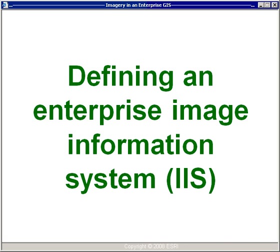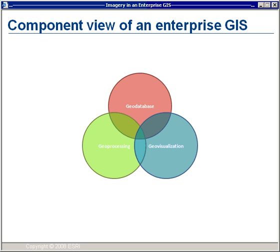So how do we bring imagery into an enterprise context? What would an enterprise image information system look like? To answer those questions, it's perhaps useful to think about how geographic information has been brought into an enterprise context, something that ESRI's users have done very successfully over the last 10 years or so. Can our experiences help us bring imagery into this same context? You're probably familiar with this component view of an enterprise geographic information system. In the enterprise, this allows for the central management of geographic information and its subsequent dissemination throughout the enterprise.